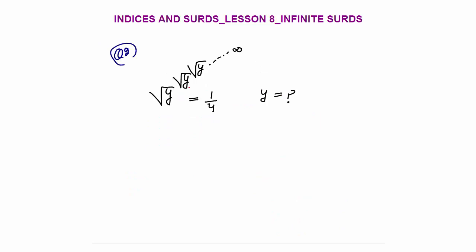Now we solve question number 2: √y raised to the power √y raised to the power √y, till infinity, equals 1/4. The meaning is: the whole repeating expression √y^(√y^...) up to infinity equals 1/4. Looking at the inner circled part, this is also √y^(√y^...) up to infinity, which must also equal 1/4.